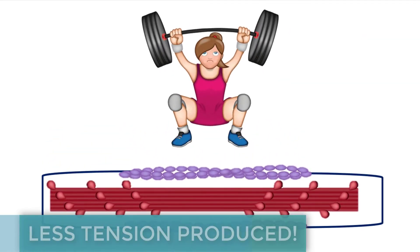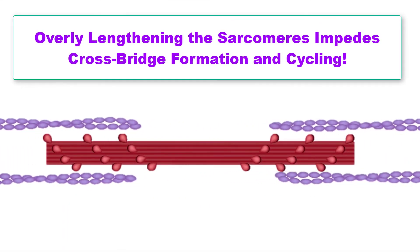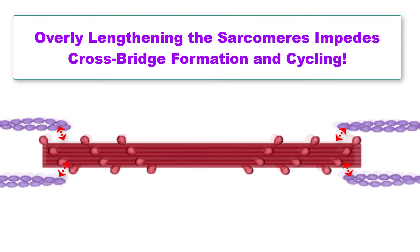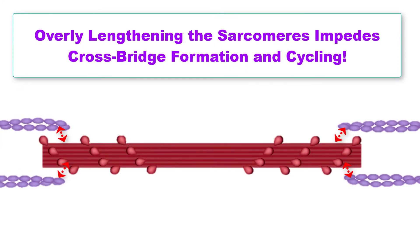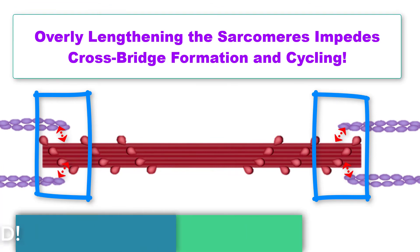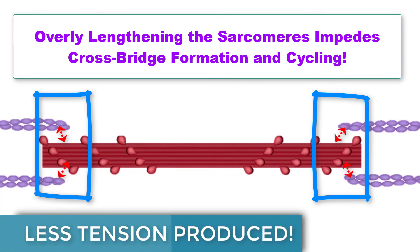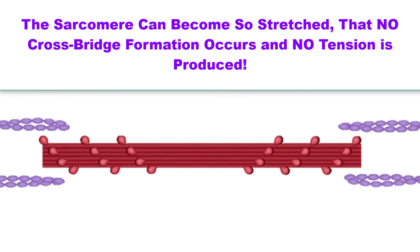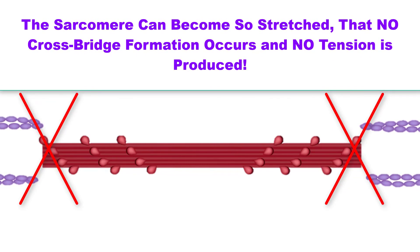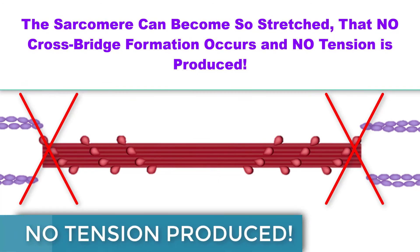When we increase the muscle length beyond the optimum point, the actin filaments become pulled away from the myosin filaments. There is little interaction between the filaments and very few cross-bridges are able to form, producing little tension. When the filaments are pulled too far from one another, they no longer are able to interact and cross-bridges fail to form at all, resulting in no tension.